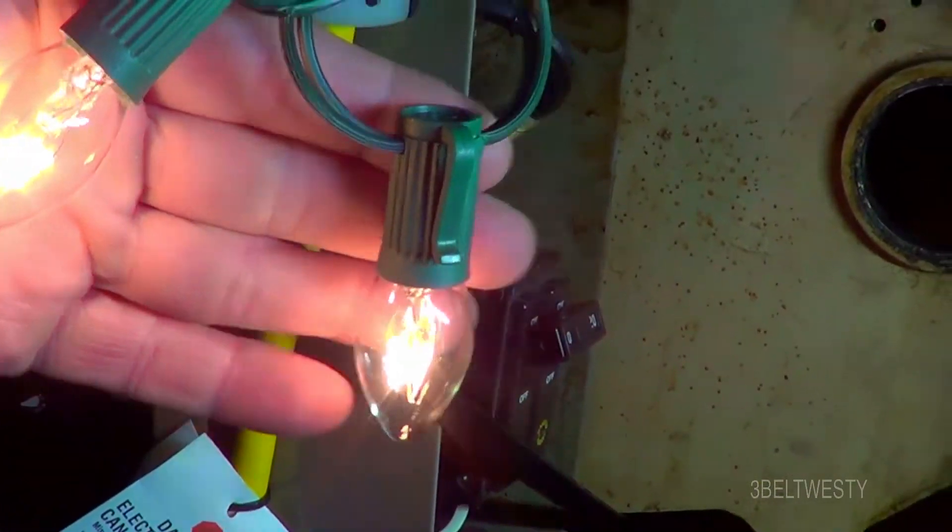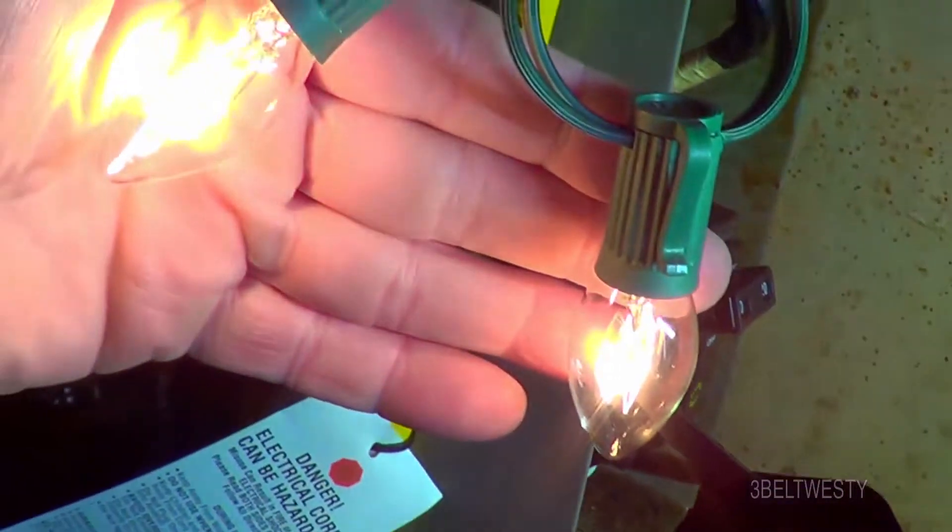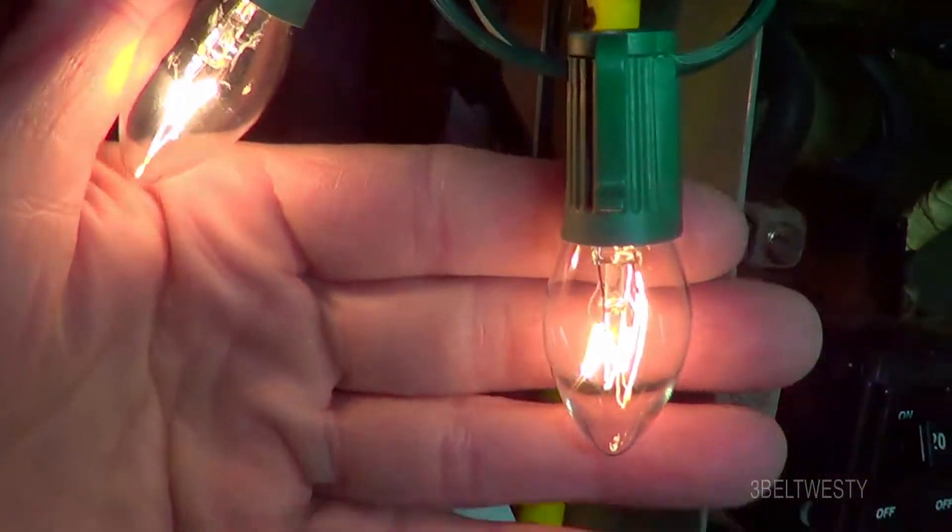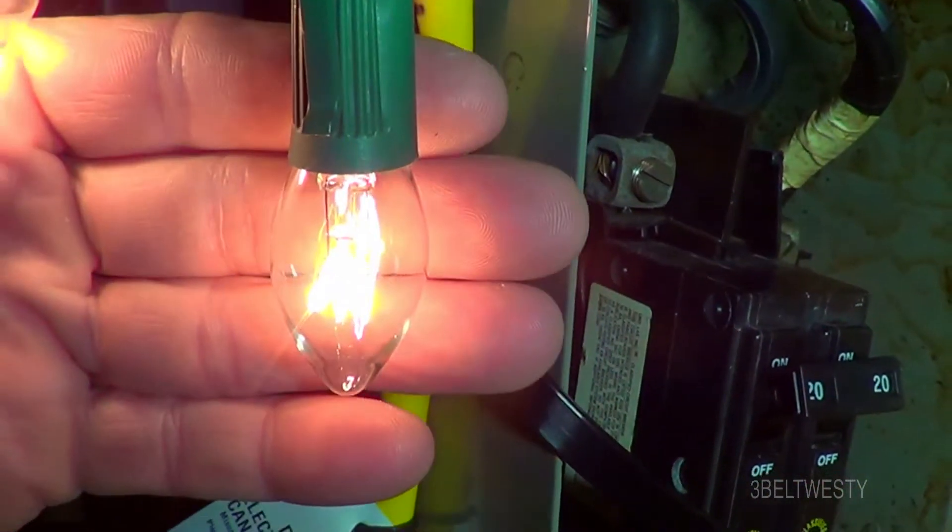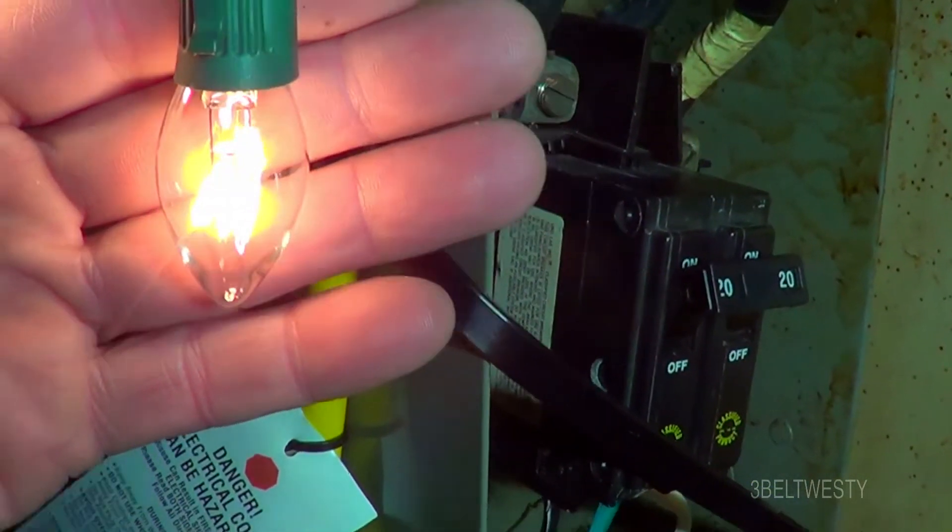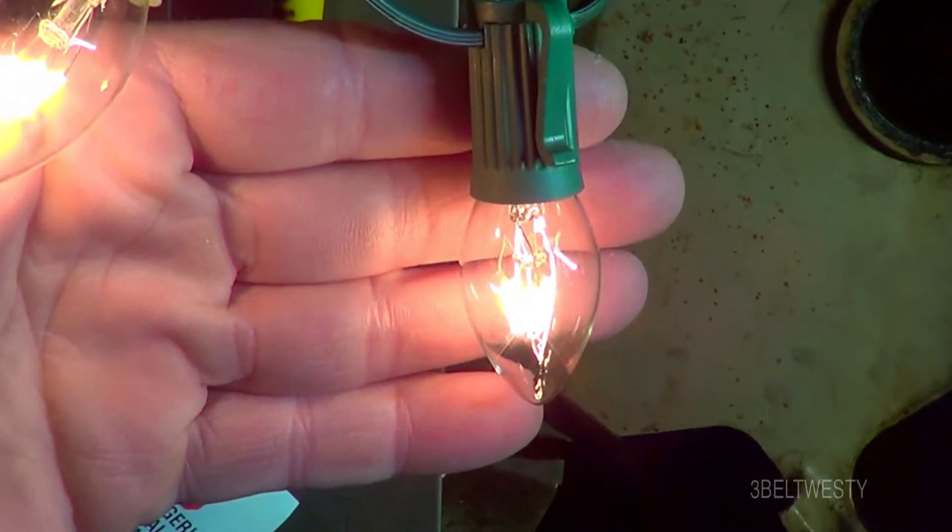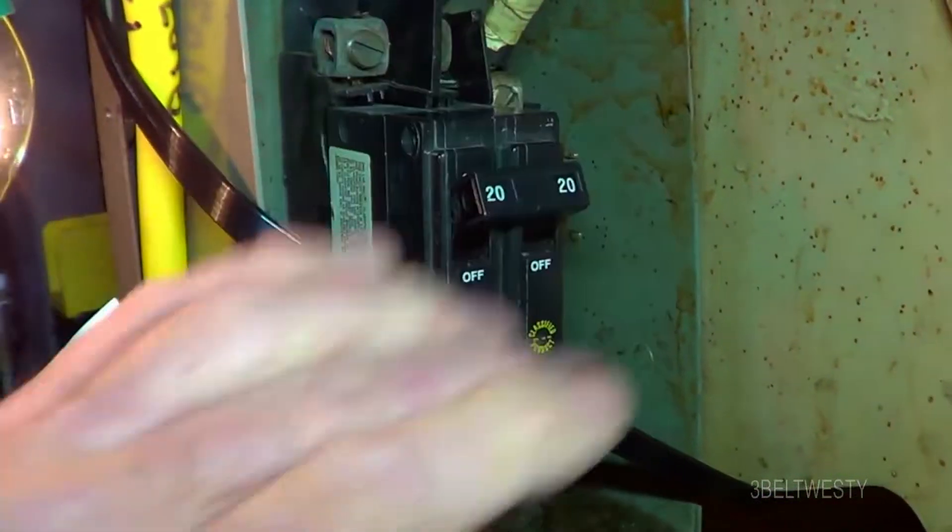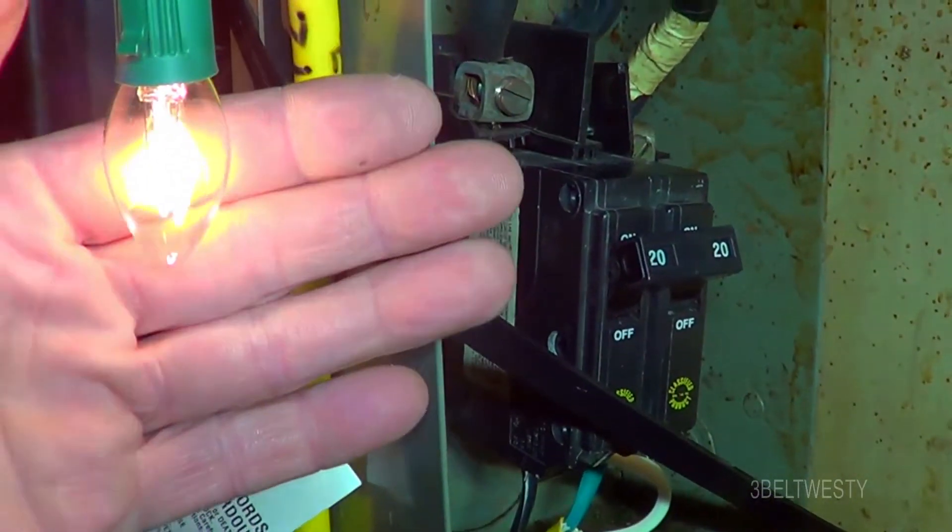And I just had these Christmas tree bulbs here hooked up to see for a loss of neutral because I got a loss of neutral in the building. I'm fighting the power company with it. The wind tends to loosen up the neutral and they're saying it's on my side, but I'm pretty convinced it's on their side.